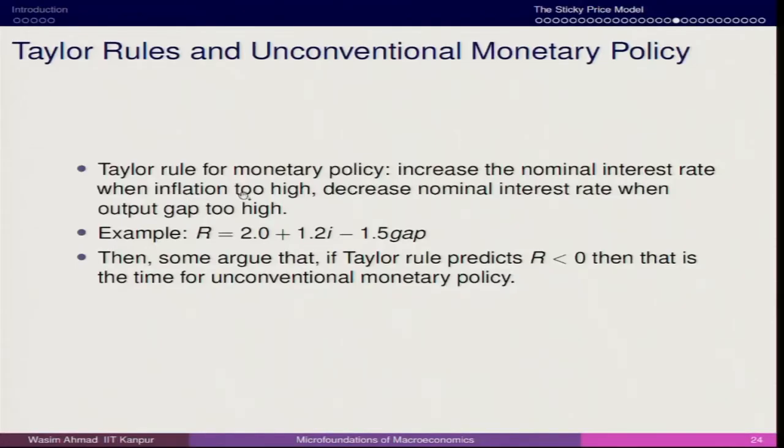Taylor rule for monetary policy: increase nominal interest rate when inflation is too high. One of the main objectives of the central bank is price stability — the rate of inflation has to be lower. Most countries have gone for an inflation targeting mechanism with certain targets fixed for the central bank. In India, as per the Monetary Policy Committee, the target is 4 ± 2 percent, so the upper range is 6 percent and the lower range is 2 percent. There is a direct relationship between the policy rate and inflation: if inflation goes up, the policy rate goes up; if inflation comes down, the policy rate comes down.